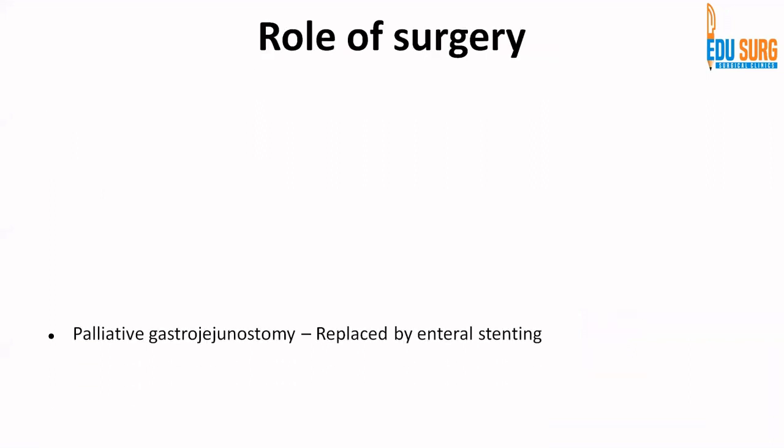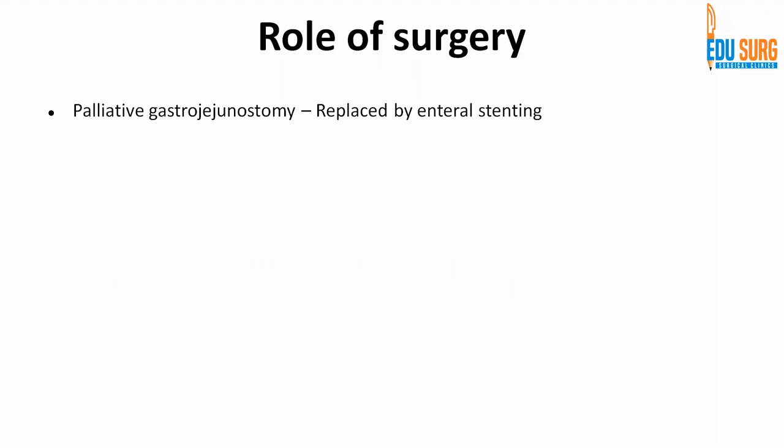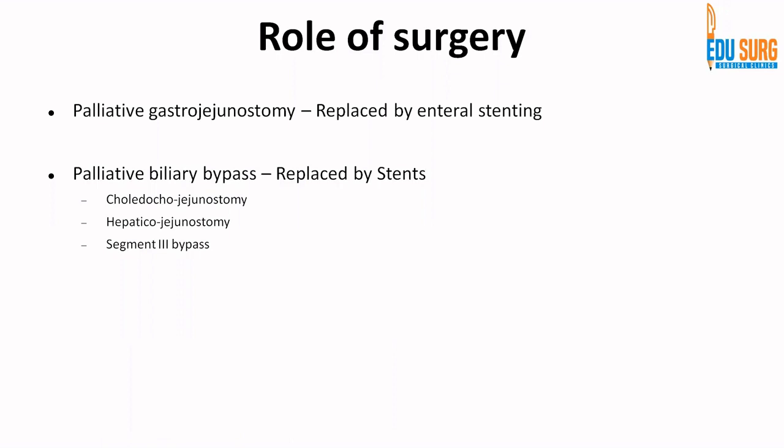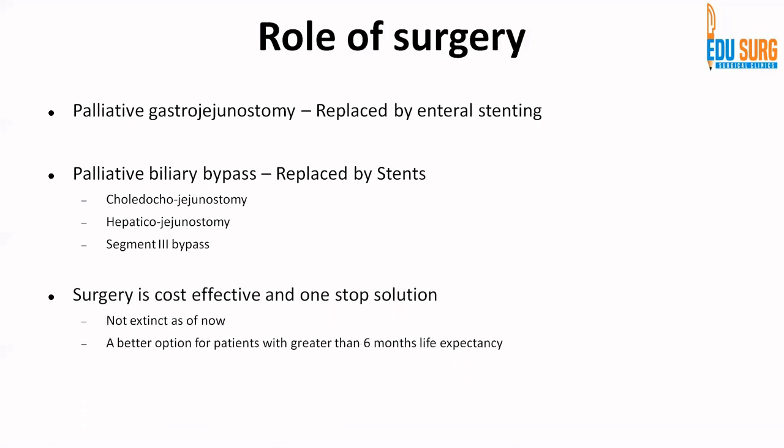The role of surgery in these patients involves three options. For gastric outlet obstruction, a palliative gastrojejunostomy can be done — now performed laparoscopically but increasingly being replaced by enteral stenting. For obstructive jaundice not manageable endoscopically or percutaneously, a palliative biliary bypass with gastrojejunostomy can be performed — options include choledochojejunostomy, hepaticojejunostomy at the CBD or CHD level, or intrahepatic segment 3 bypass. Surgery is a better option only for patients with a life expectancy of more than six months.